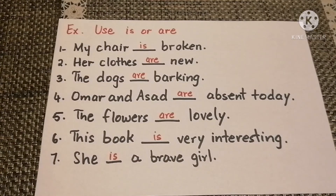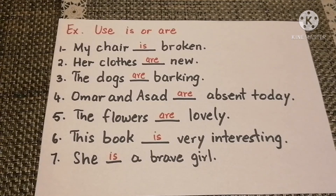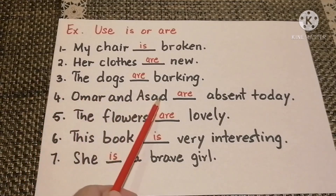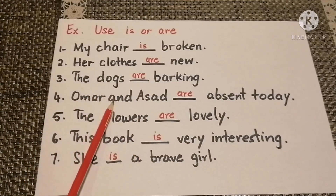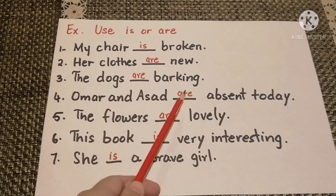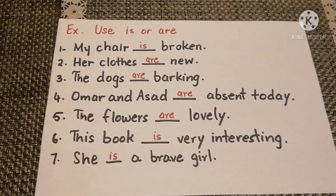Hope you have understood the concept of using the helping verbs 'is' and 'are.' The most important part is that when we have two singular nouns combined with 'and,' we use 'are.' Thank you.